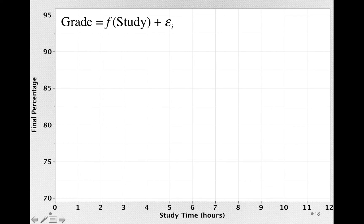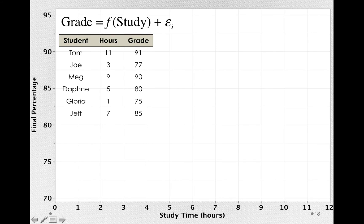Now we'll come back to error in just a few minutes, but let's actually look at some data and see how we would model this relationship. So here are six students that we randomly assigned to different amounts of study: 1, 3, 5, 7, 9, and 11 hours. We also have the grades that each of these students received on that final exam.